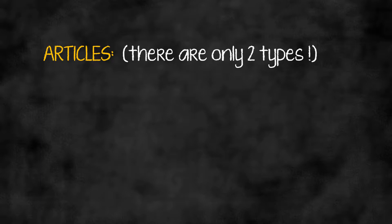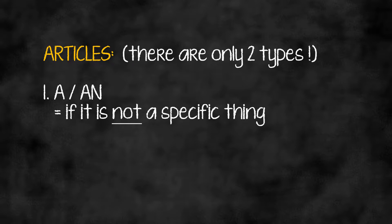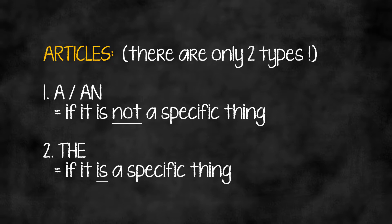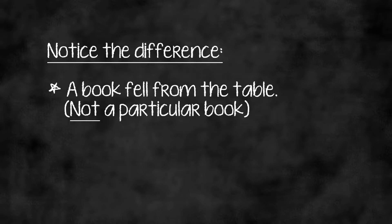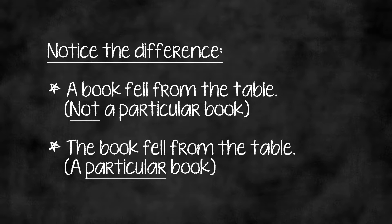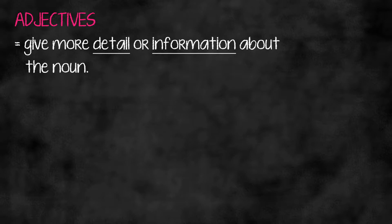Two types of modifiers of subjects: articles or adjectives. Articles — there are only two: 'a' or 'an' if it's not a specific thing. We can say 'a book.' Or 'the' if it is a specific thing — we can refer to 'the book,' a specific book. Note the difference: 'A book fell from the table' — not a particular book. 'The book fell from the table' — a particular book.